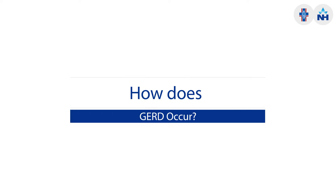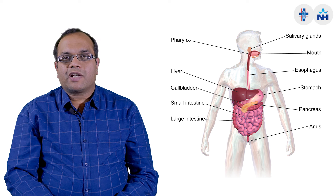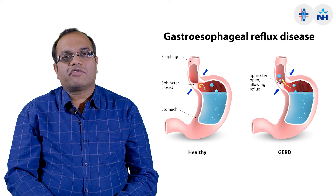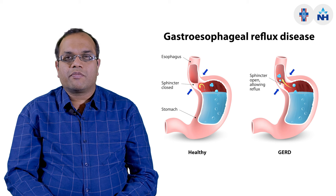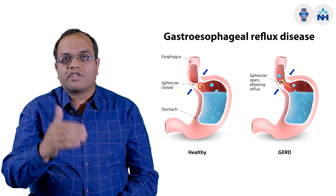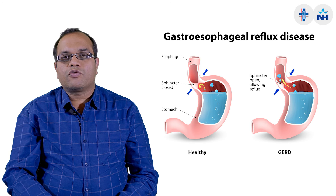So how does GERD occur? For that we have to understand the normal physiology of our digestive system. When we take something by mouth, it goes down the food pipe then into the stomach through a valve which is called the lower esophageal sphincter. This valve is a one-way valve — it does not let stomach contents leak into the food pipe. So when this LES, or lower esophageal sphincter, leaks, it allows stomach content back into the food pipe.